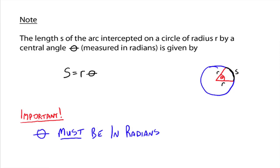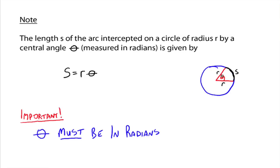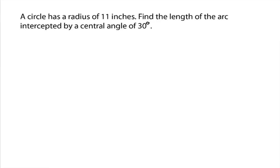So here's our first example. A circle has a radius of 11 inches. Find the length of the arc intercepted by a central angle, this right here, theta, that's called the central angle, by a central angle of 30 degrees. First thing we notice, we've got degrees, so we need to convert this 30 degrees into radians.